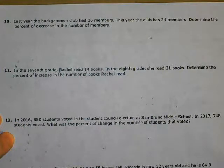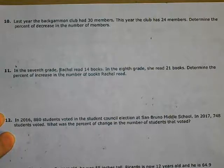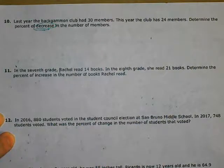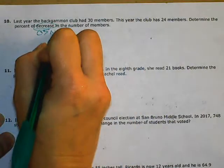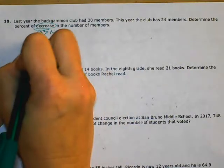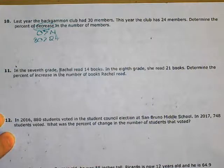Number 10: Last year, the backgammon club had 30 members. This year, the club has 24 members. Determine the percent of decrease in the number of members. They tell us it is a decrease. Therefore, the old is greater than the new — 30 is greater than 24.